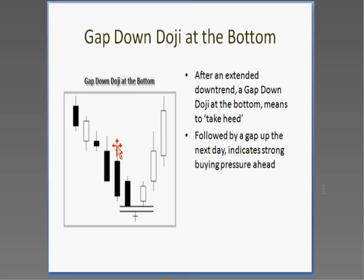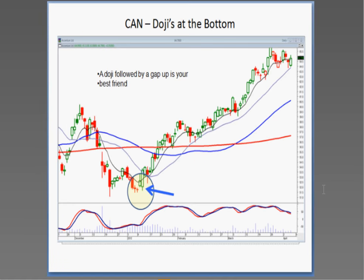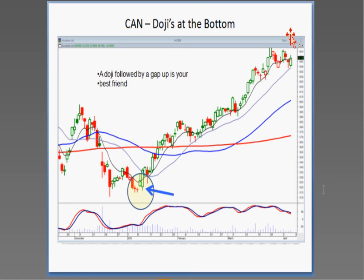Human emotions — where do most people sell? They panic sell at the bottom. If we see a signal at the bottom and we see it gap up the next day, this is what we call your best friend. Any time you see a doji in the oversold area and they gap it up, you want to be buying immediately — not only is the probability of being in an uptrend high, but it's probably going to be a fairly strong uptrend.